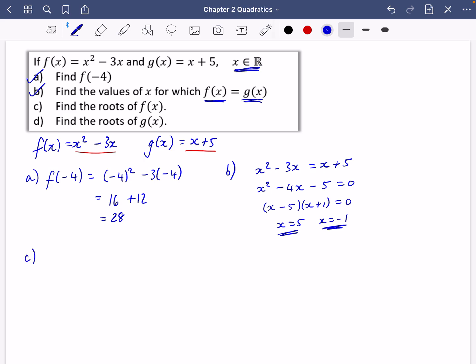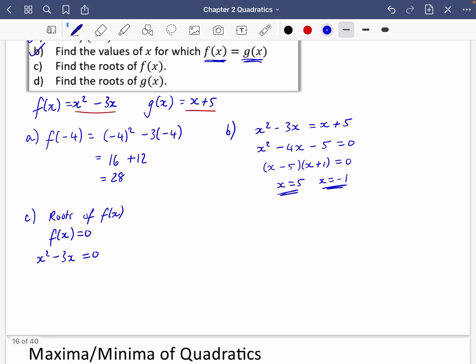Part C of the question says find the roots of f of x. This means that f of x is equal to 0. In other words, x squared minus 3x is equal to 0. I'm going to factorize, or I could use my equation solver, but I'm going to take out an x. So that's x times x minus 3 equals 0.